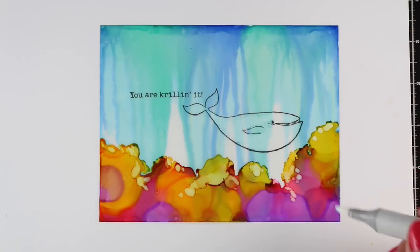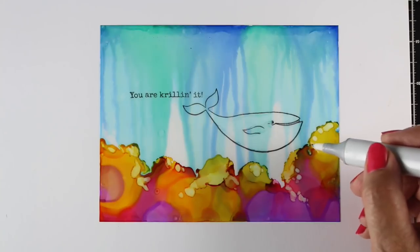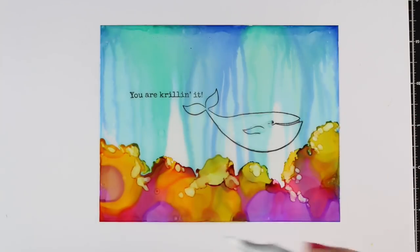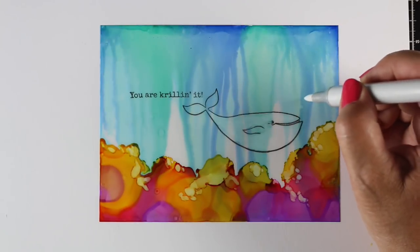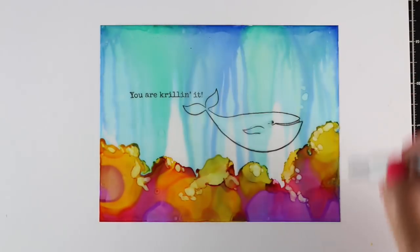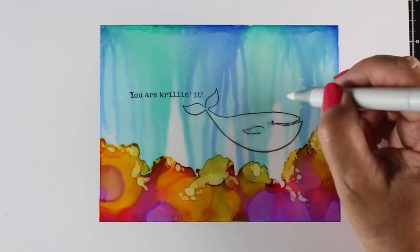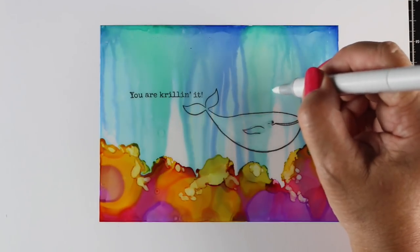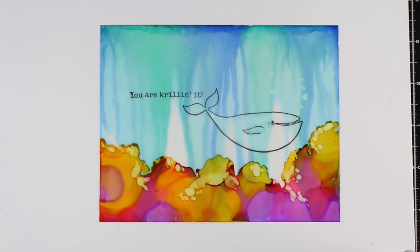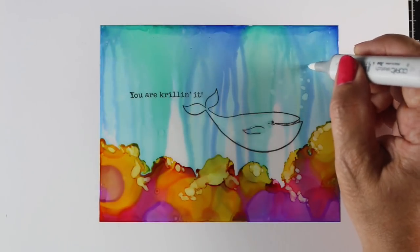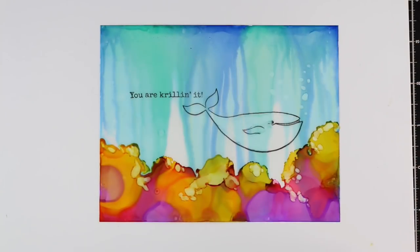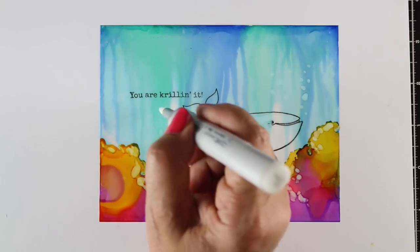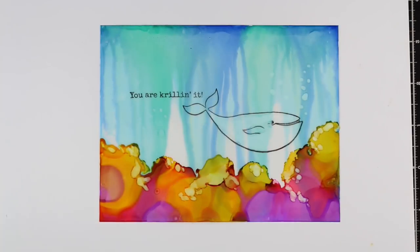You can get as elaborate or inelaborate as you want with all of the little details you put into the coral. It really depends on the colors you use and how they kind of mush out because every single one is going to be different because of how the ink goes on here. So I'm going to add some bubbles with my colorless blender, and then I'll do a little spritzing to add a little bit more detail on them as well. So very cool, very fun kind of technique.